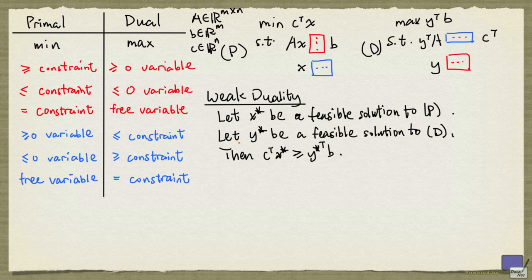We are now going to revisit weak duality. Weak duality states the following. Let x star be a feasible solution to the primal problem, and let y star be a feasible solution to the dual problem. Then c transpose x star is at least y star transpose b. We're going to prove this directly, and we'll see from the proof that another result will come out.